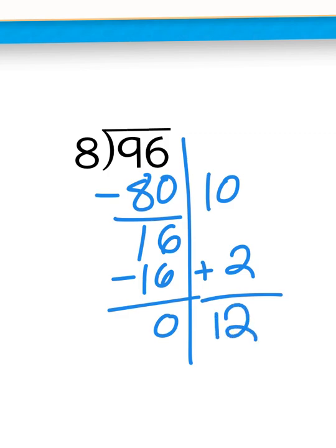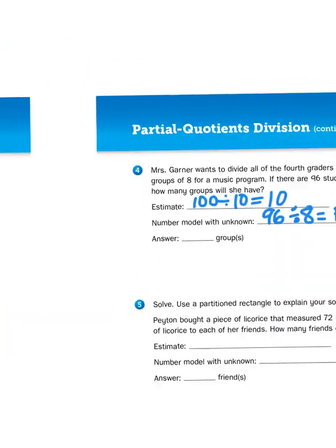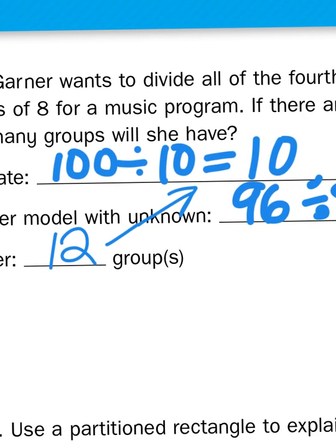So when I go to add my partial quotients, 10 groups plus 2 groups equals 12 groups. There are 12 groups of 8 that I can get out of 96. So my answer is 12 groups. Listen, 12 is pretty close to my estimation of 10.